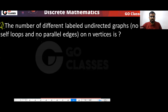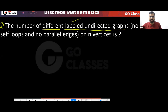The question is asking how many different labelled undirected graphs you can have? No self-loop, no parallel edges — that means simple graphs. On n vertices.